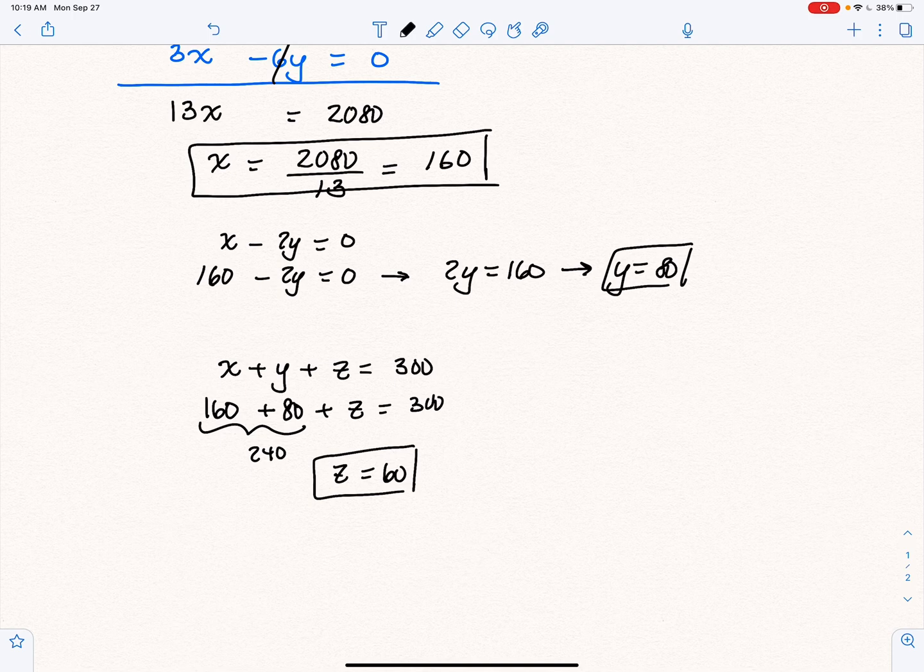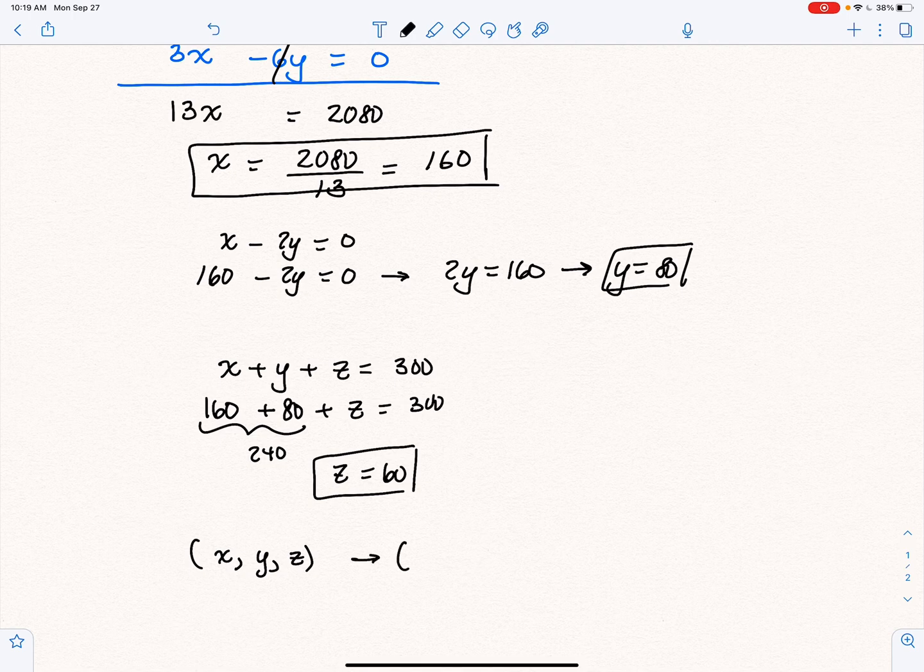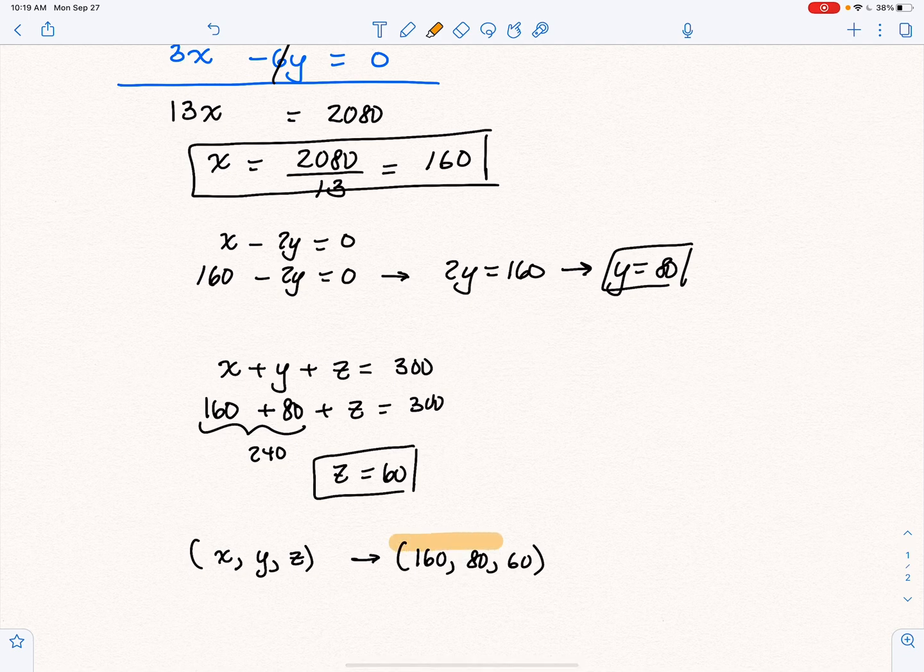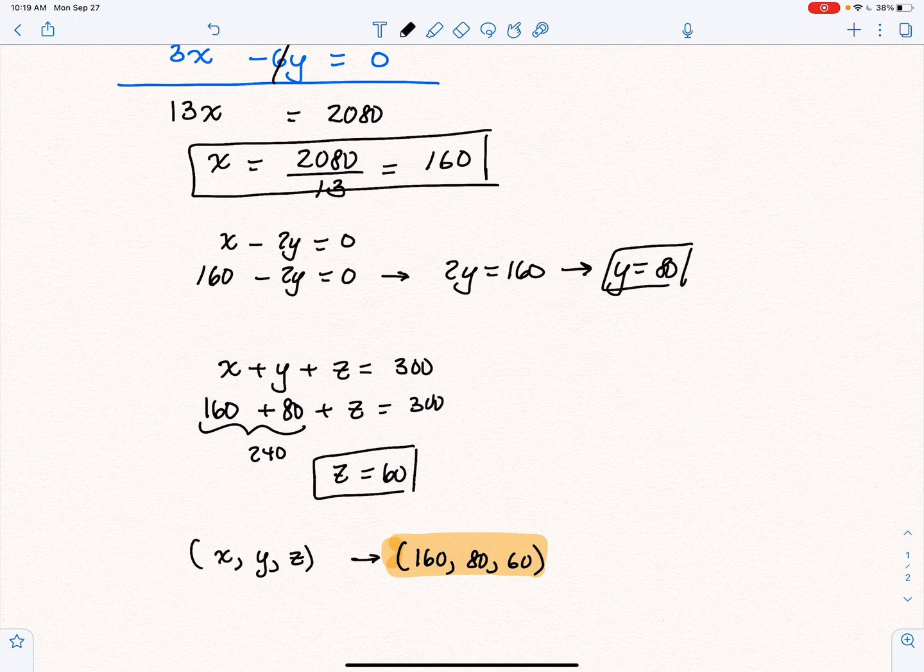So there is our solution. Now, remember, we can also represent the solution as an ordered triple, which is x comma y comma z. And that means in this case, and it just so happens we found them in that order. That was kind of a fluke. But there we have it. So that is our solution to this system, which means if you substitute x equals 160, y equals 80, and z equals 60 to each equation, it'll work. And that is the only solution that works. Thank you for watching.